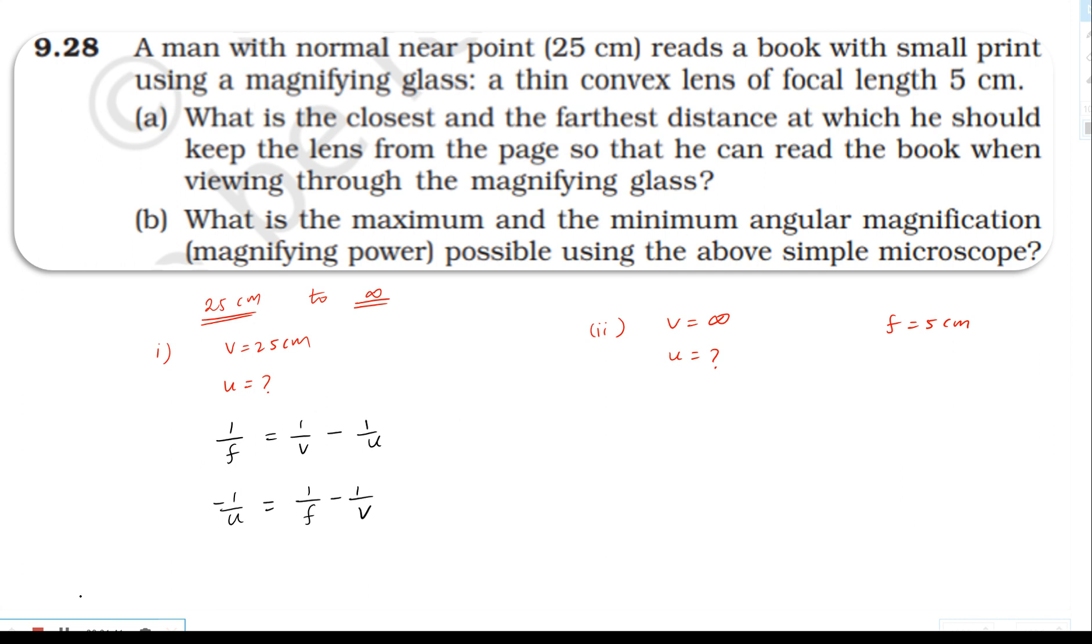For the first case, the image distance is minus 25 centimeters - the image forms on the same side virtually in the magnifying glass. The focal length is 5. So one by u equals one by f minus one by v, which is one by five minus one by minus 25. Minus minus gives plus. Calculating: one by u equals one by five plus one by 25, which gives negative 4.2 centimeter.